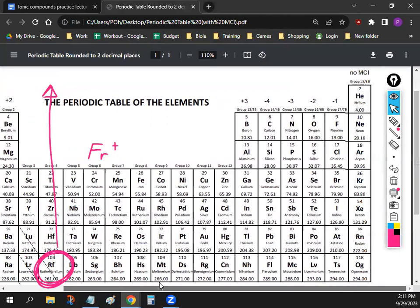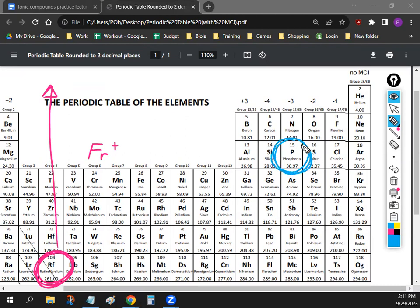Alright. The other one is P. And if you take a look at P on the periodic table, phosphorus is right here. And so P is going to be in the negative three column. So that means P is going to be P three minus.